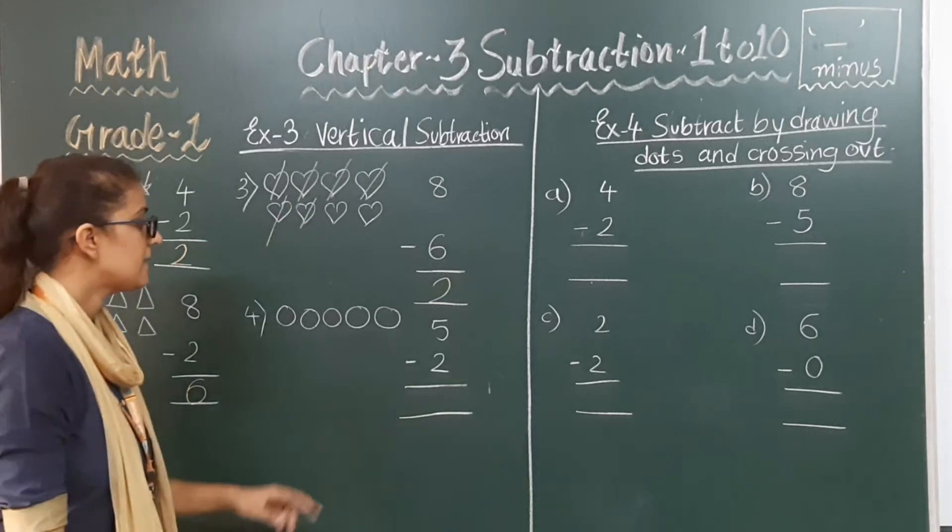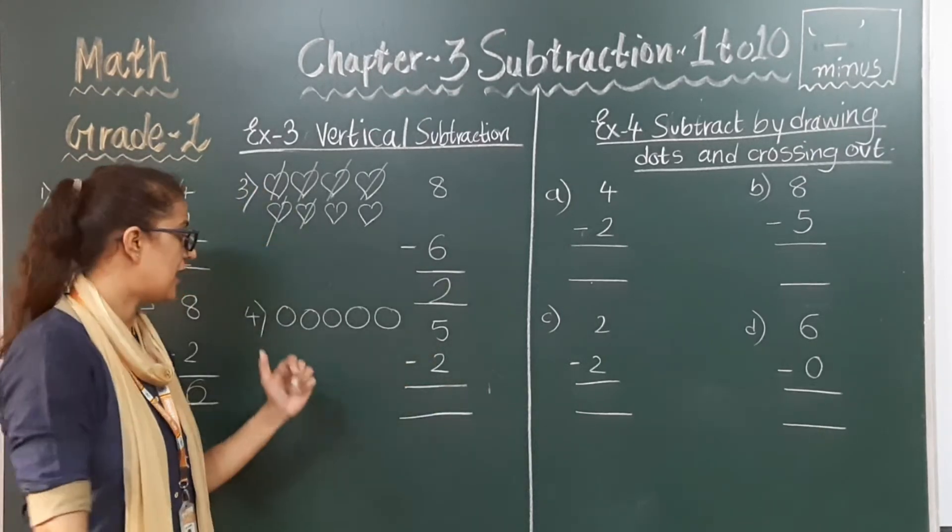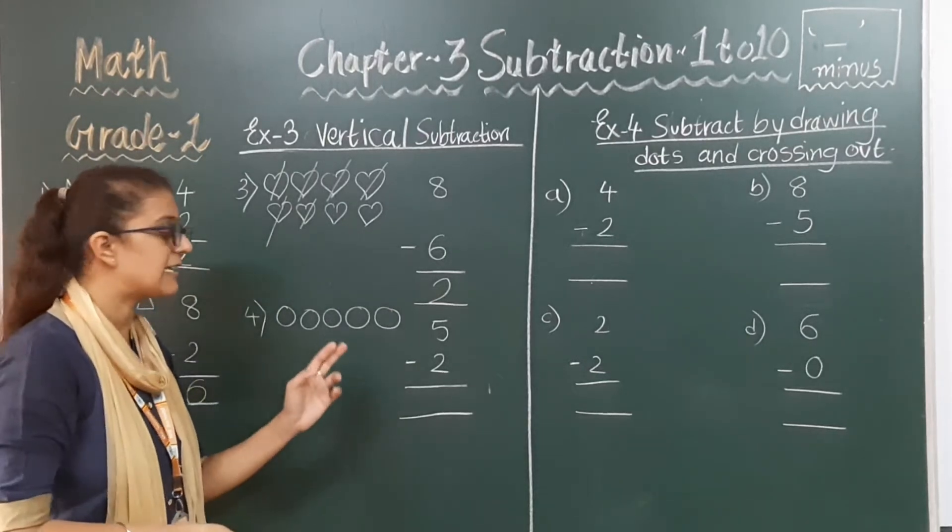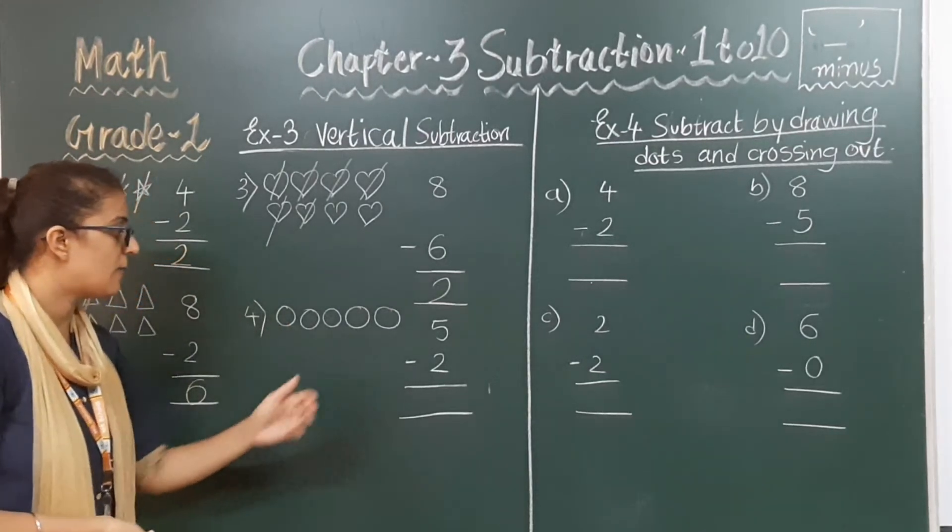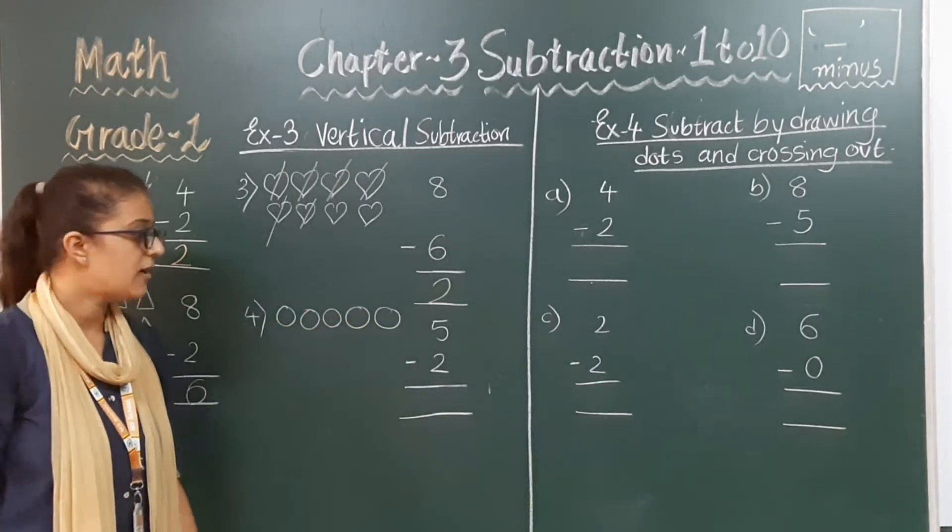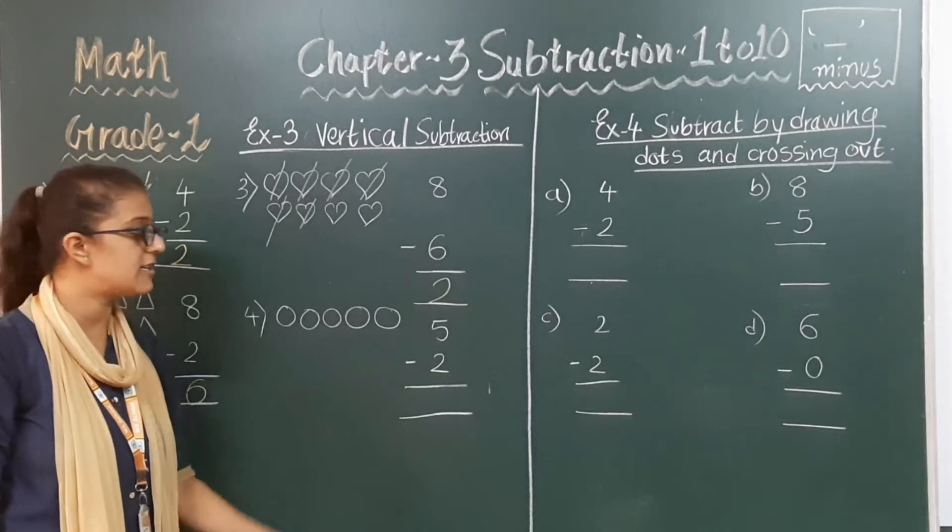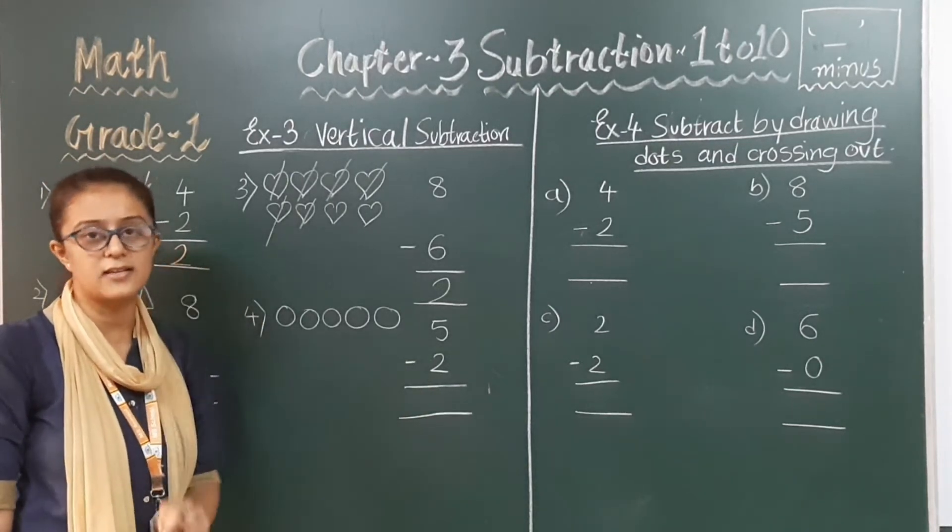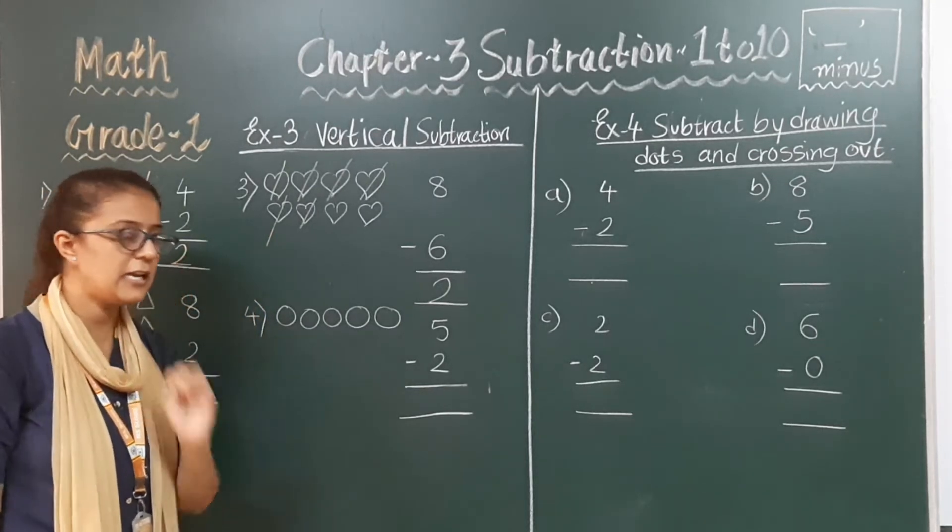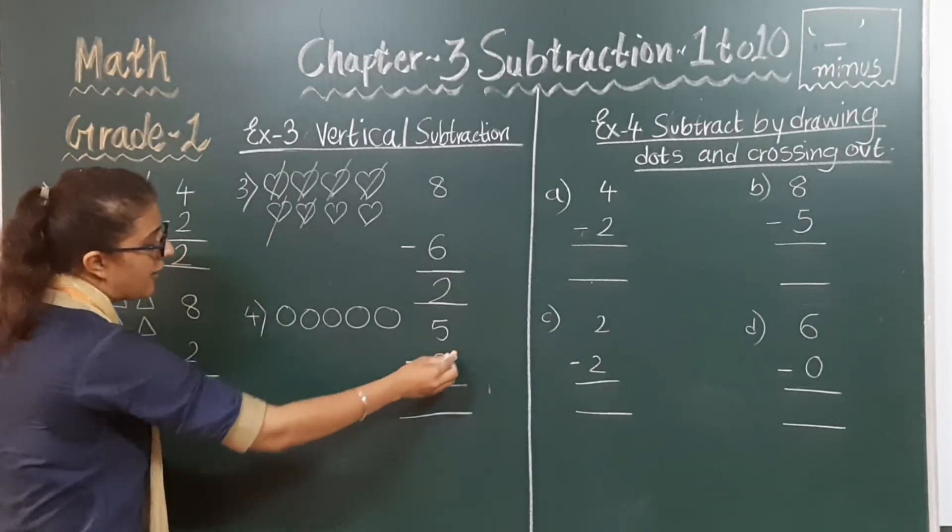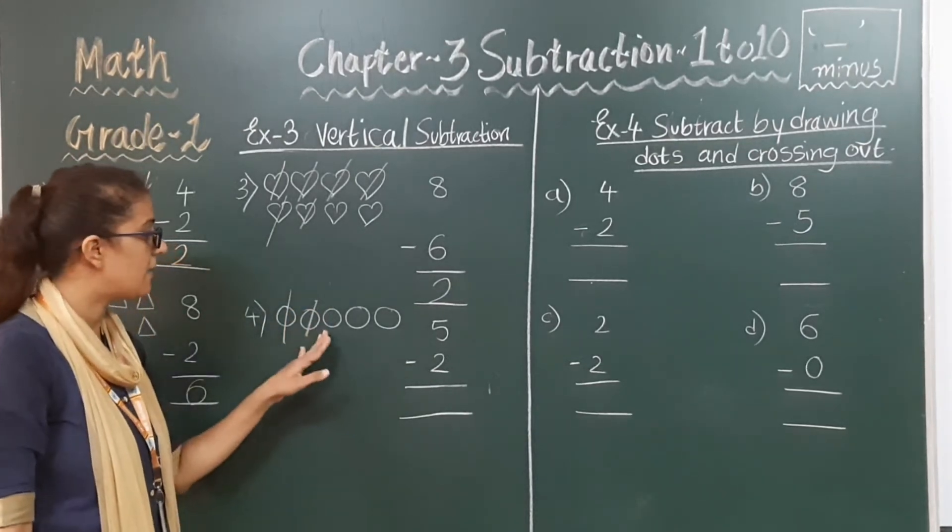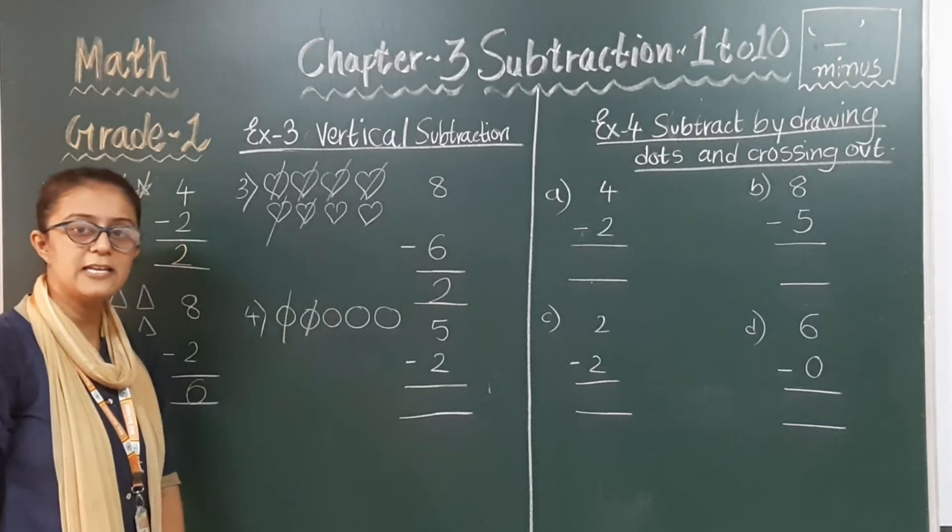Next. 5 minus 2. Now here there is a circle shape given to you. How many circles are there? One, two, three, four and five. So from this 5 circles we have to minus 2 circles. 5 fingers minus 2 equals 3. So here same, 5 circles we have to minus 2 circles. Total of one, two, three. So 5 minus 2 is equals to 3.